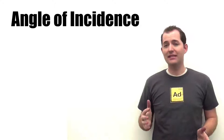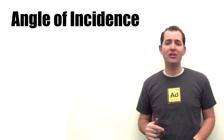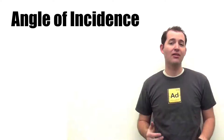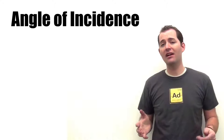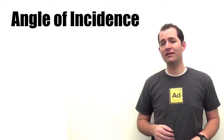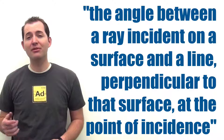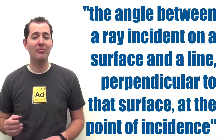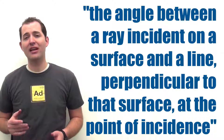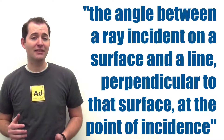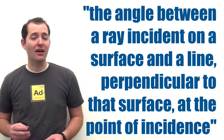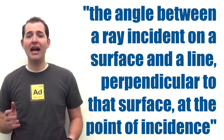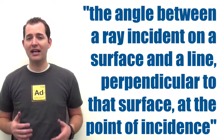We're going to look at the angle of incidence of light, or more specifically how the angle of incidence of sunlight on the Earth's surface relates to the seasons. The definition of the angle of incidence is the angle between a ray incident on a surface and a line perpendicular to that surface at the point of incidence. We can understand this better as we look at a diagram.